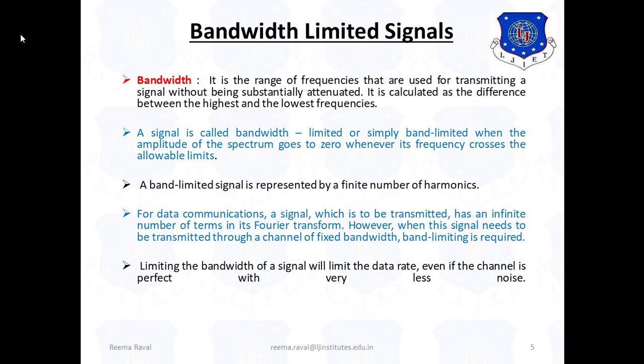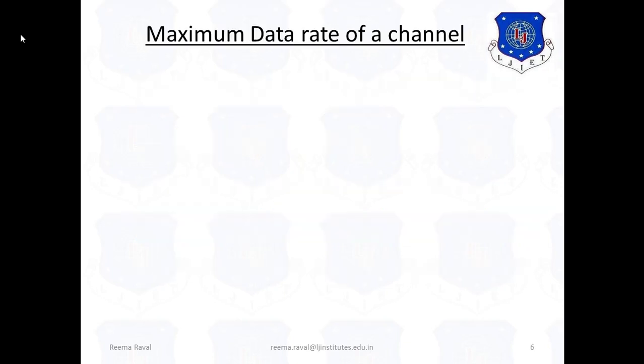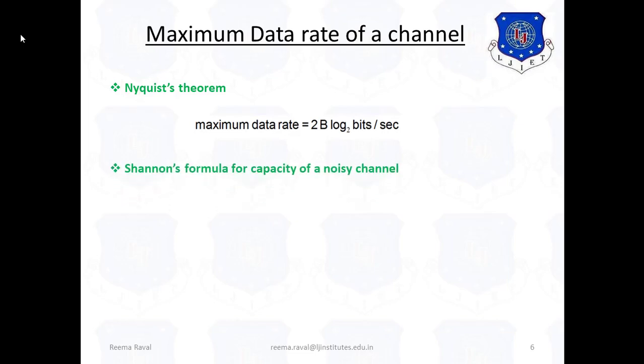Limiting of the bandwidth of a signal will limit the data rate even if the channel is perfect with very less noise. Now, let us see the maximum data rate of a signal. According to Nyquist theorem, the maximum data rate is given as 2 × b × log₂ bits per second, where b indicates the bandwidth. The Shannon's formula for capacity of a noisy channel is given as maximum number of bits per second = v × log₂(1 + S/N), where v is bandwidth and S/N is signal to noise ratio.